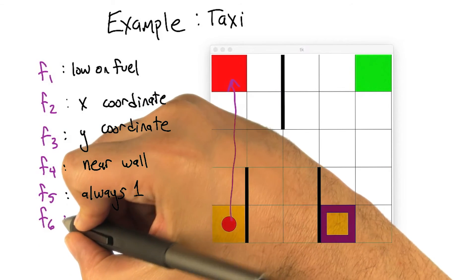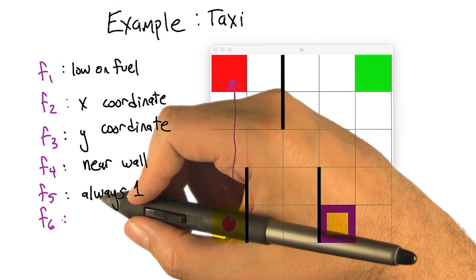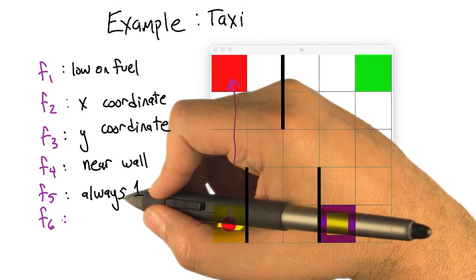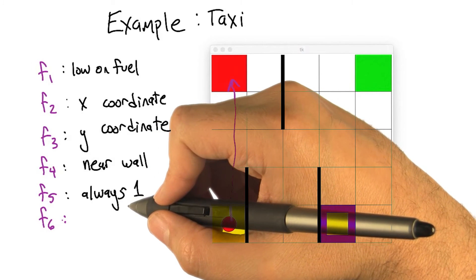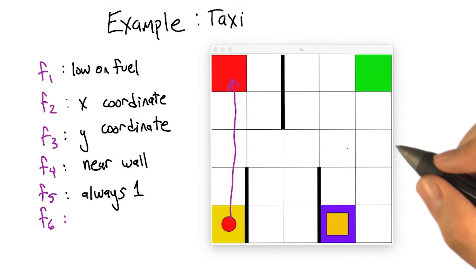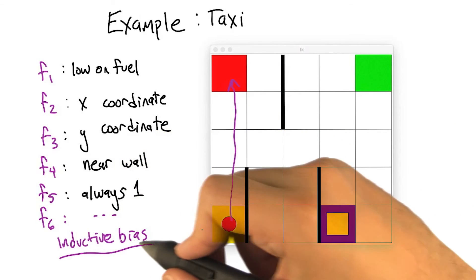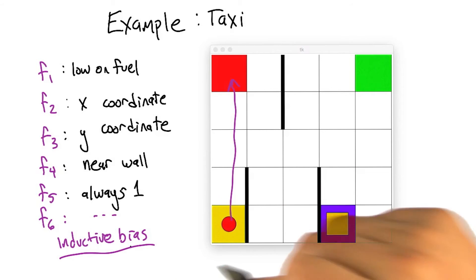and where the passenger wants to end up. There are all kinds of things that we could, the ways we could describe things, and some of those things make some states look more similar than other representations would. I think I remembered the term.